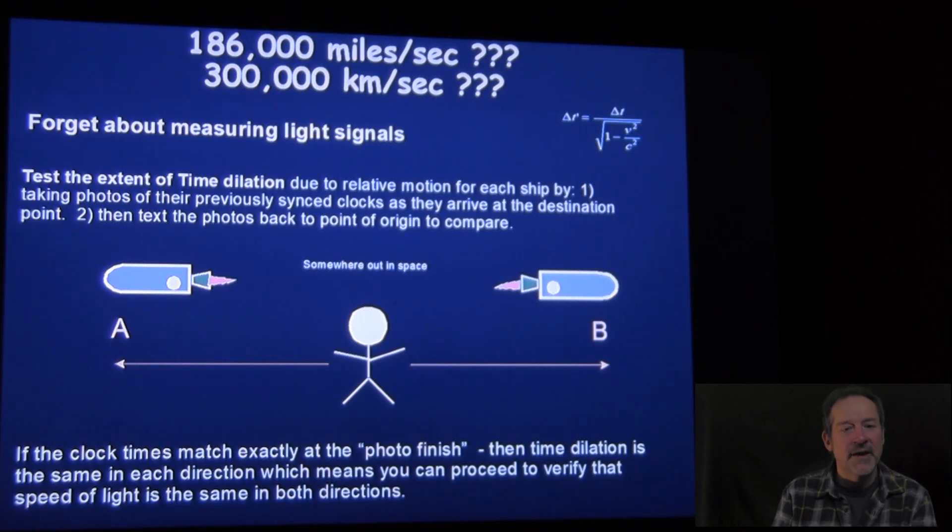So they would be traveling the same velocity, they would be achieving a finish line at the exact same distance A does as does B, and we could measure the clock time by snapping a photo finish of the clock as it crosses the finish line. And then we could just simply text the photos with the result of each clock A and B back to the central location. And if in fact the clock times match at the photo finish, then the extent of time dilation would be the same in both those directions, which then means you could confidently proceed to do your speed of light experiment and verify. And by the way, if the clock times are different, then that would be a hint that the speed of light would be different as well, and you've just exploited that by doing that experiment.